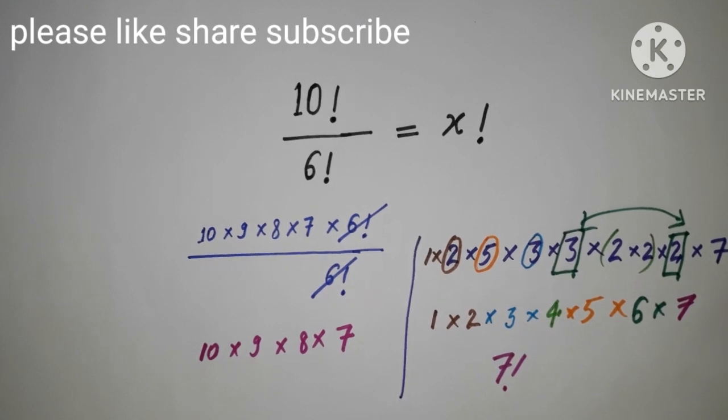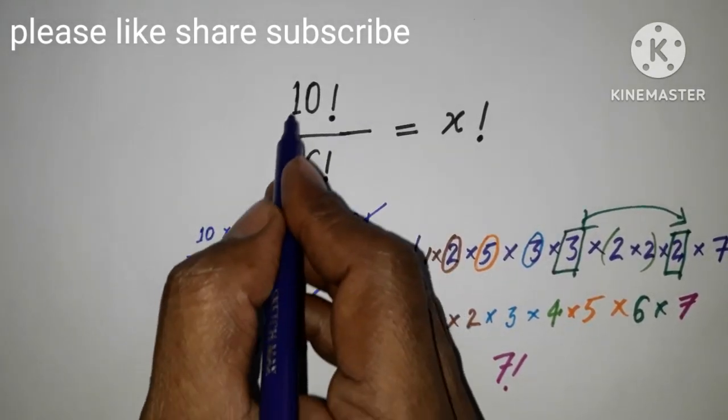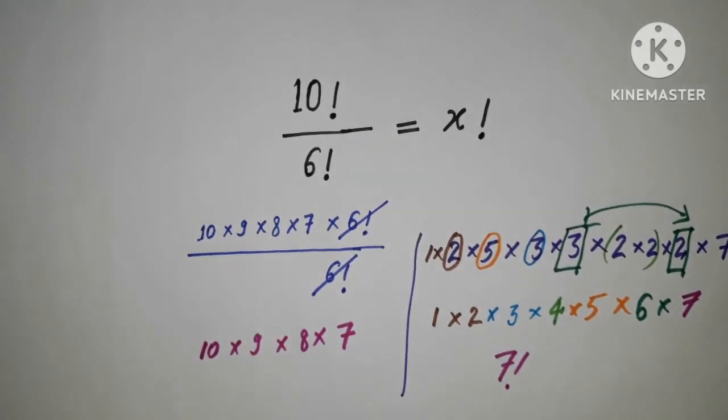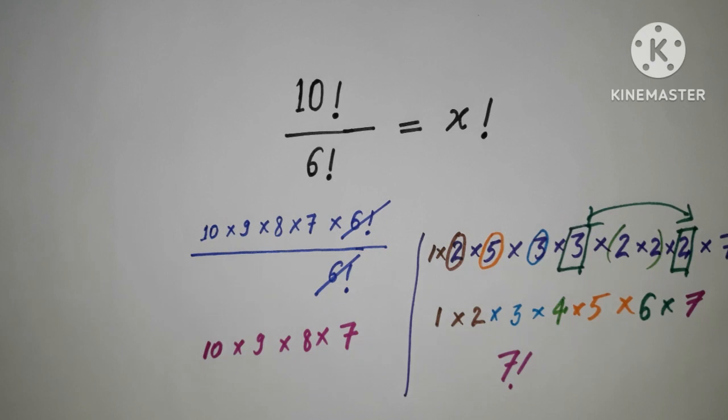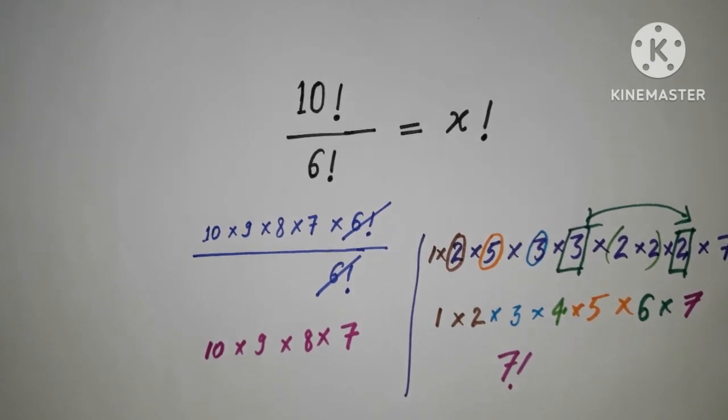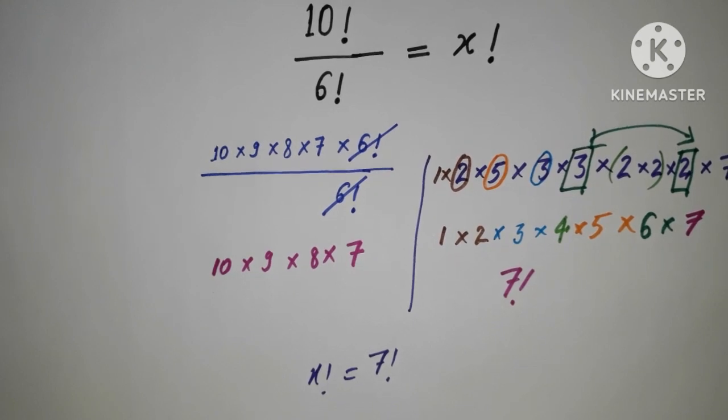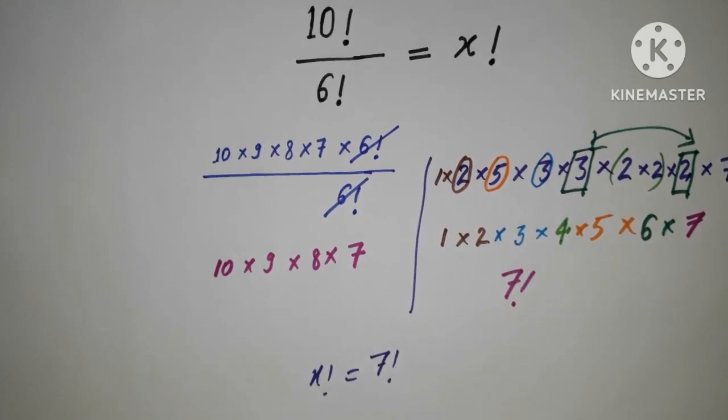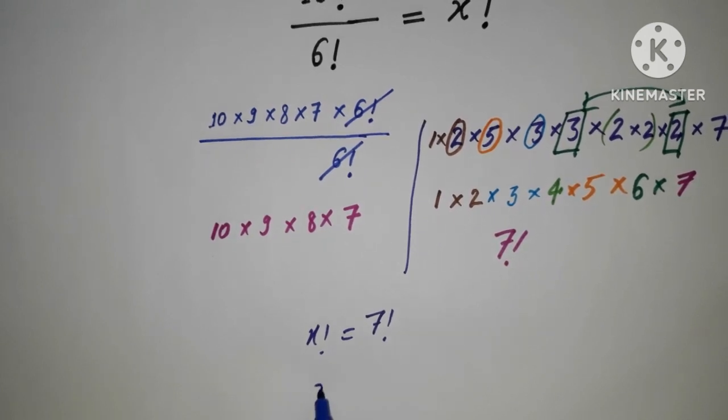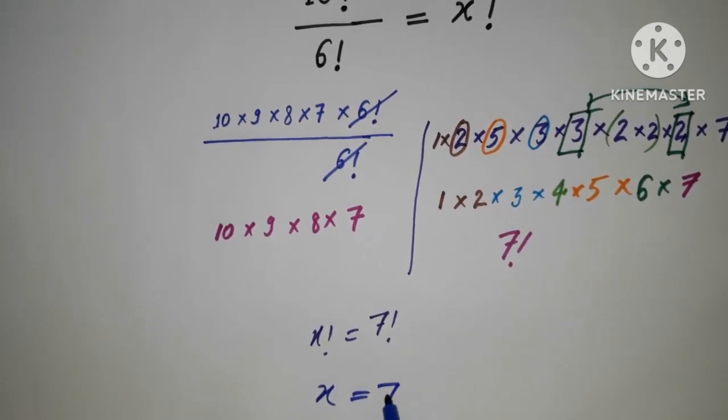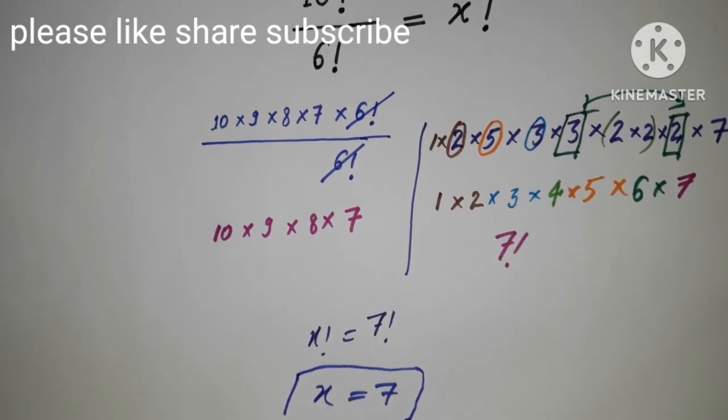So in this way we can see that this whole, the value of this fraction is 7 factorial. That is here, x factorial. So x factorial is equal to 7 factorial over here. I have the value of this is x factorial over here, and this is our final solution.